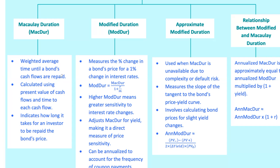Let's say you're holding a five-year bond with a 4% annual coupon. If the Macaulay duration is four years, it means it will take approximately four years to recover the bond's price through its cash flows, adjusted for the time value of money.